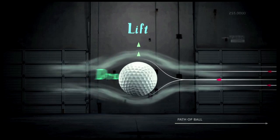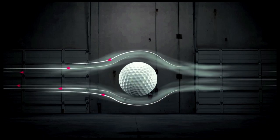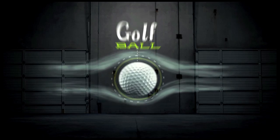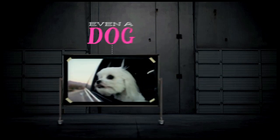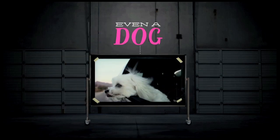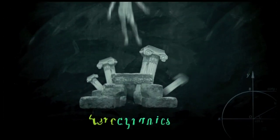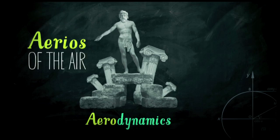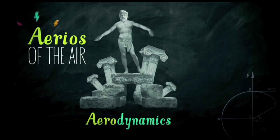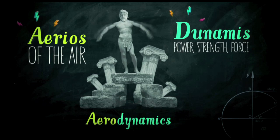Aerodynamics is the way air moves around things — things like a golf ball, a frisbee, or even a dog. The word aerodynamics comes from two Greek words: aerios, meaning 'of the air,' and dunamis, which means 'power, strength, or force.'